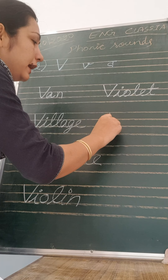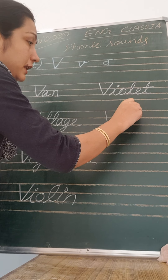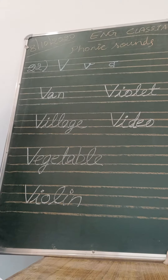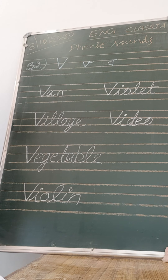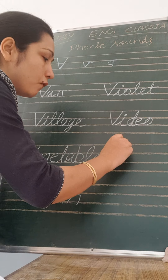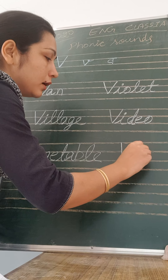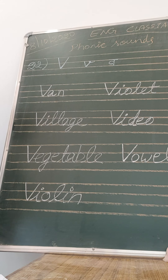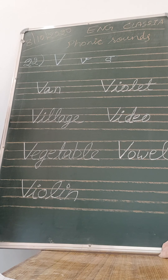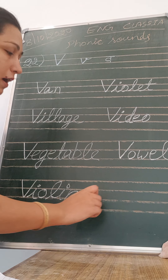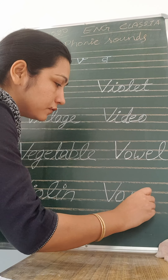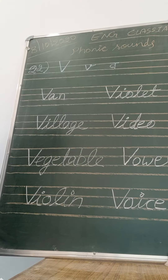V is for video. Now last is voice. Can you hear my voice? Kya aapko meri voice aa rahi hai, children? V is for voice — wah, wah, voice. Voice means 'awaj.'